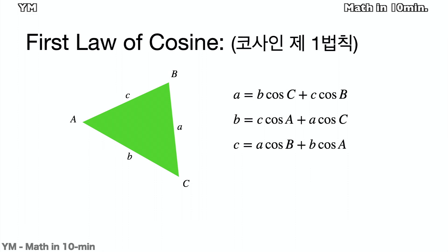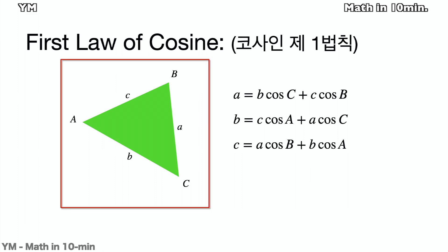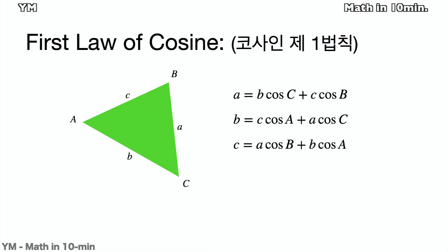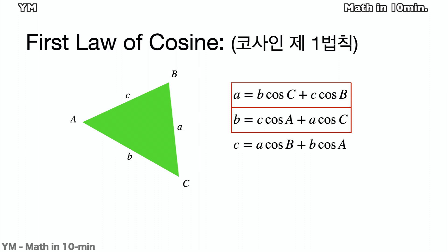The next is the first law of cosine. Using triangle ABC from the previous slide, according to the first law of cosine: A equals B times cosine C plus C times cosine B; B equals C times cosine A plus A times cosine C; and C equals A times cosine B plus B times cosine A.